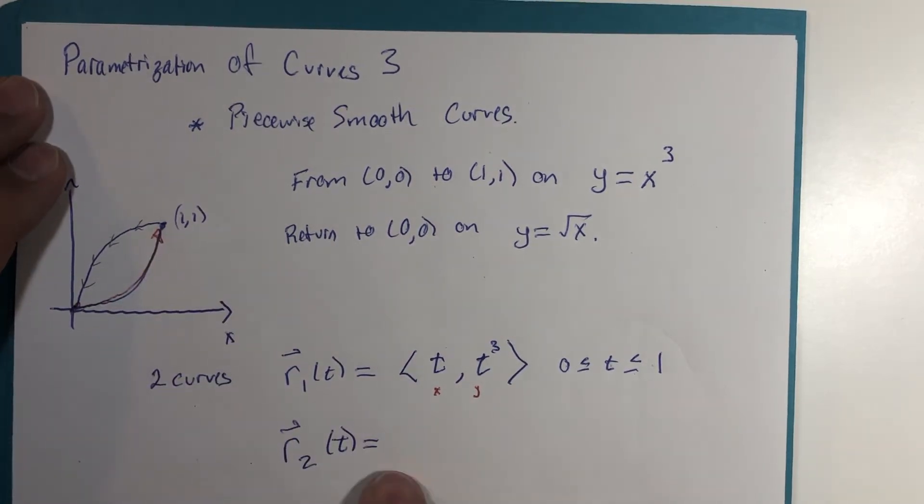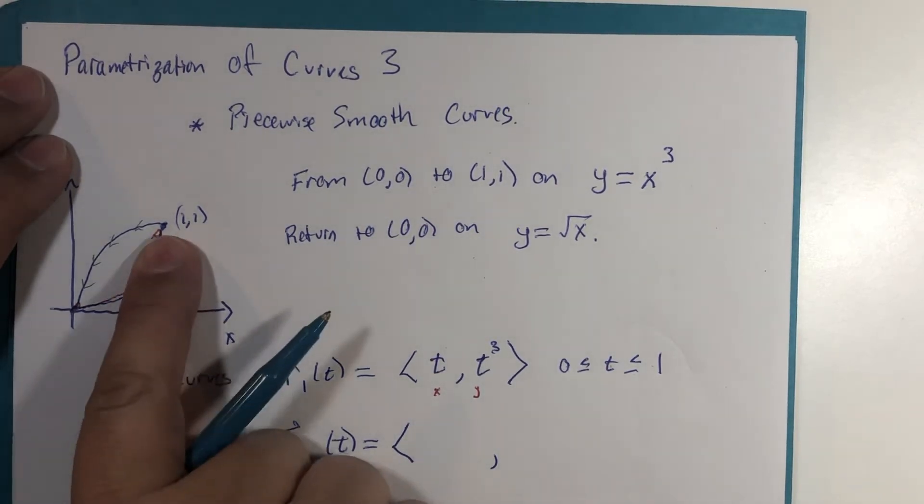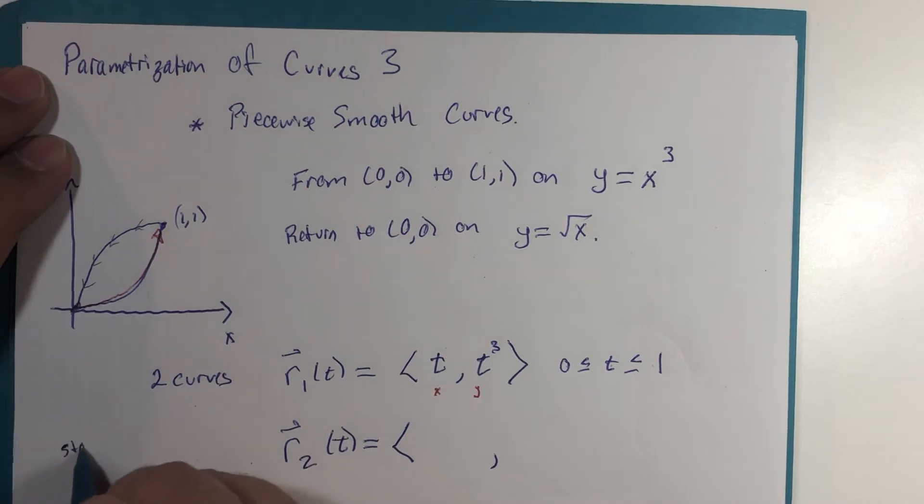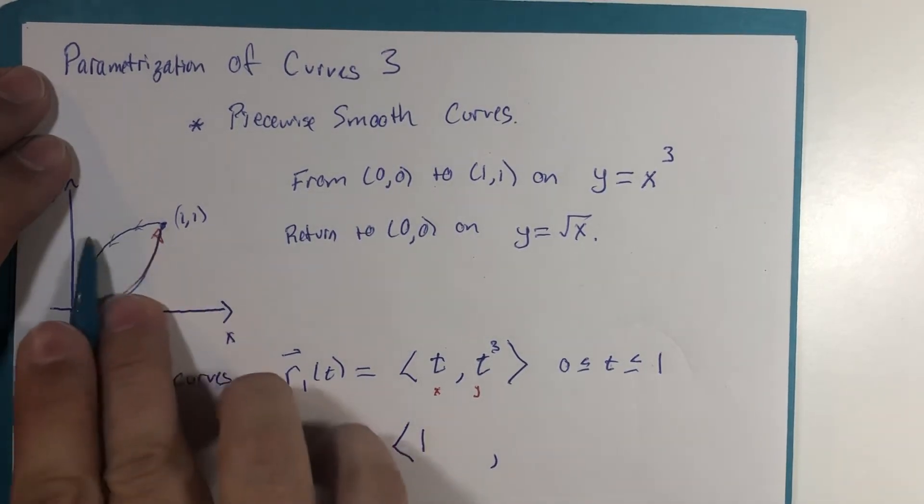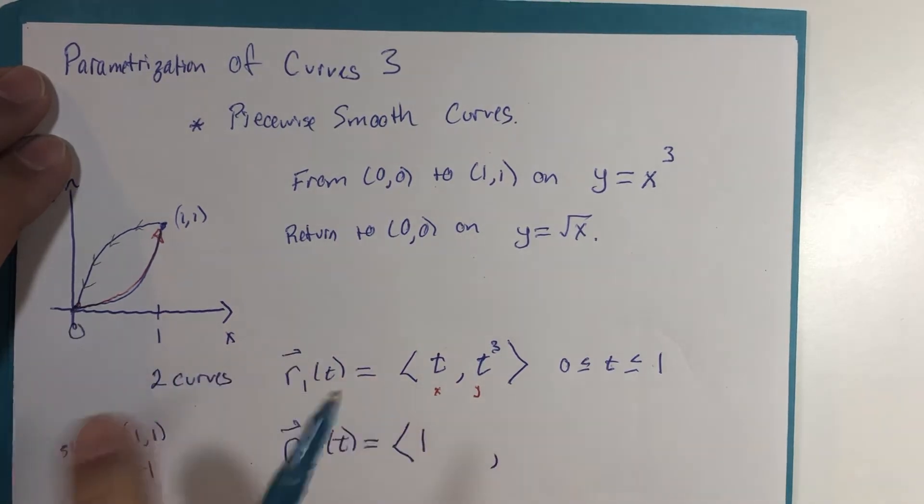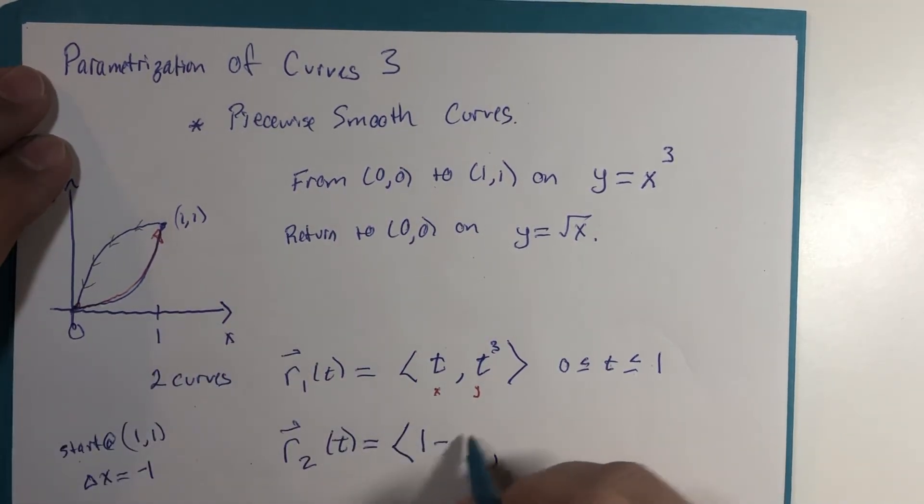Now we could use that same function concept for the return trip, but there's two obstacles to cross. Let me just do the first obstacle, which is really small, and then for the second obstacle I'm going to switch pages because it's more interesting. So we start at the point (1,1), so I need my x coordinate to start at one and then the delta x is actually equal to negative one because it goes left one unit.